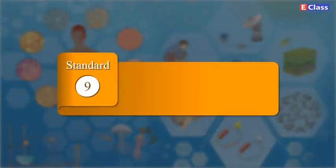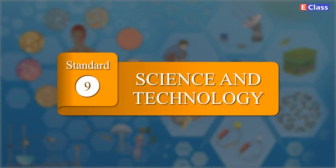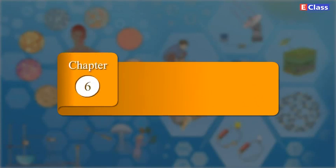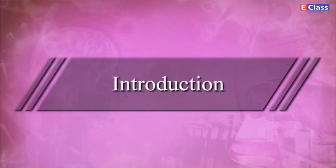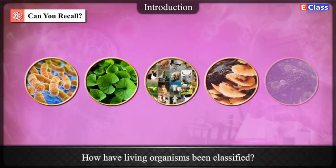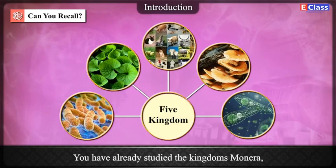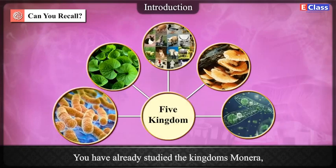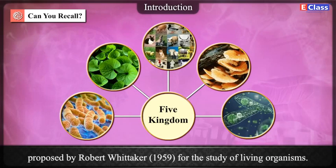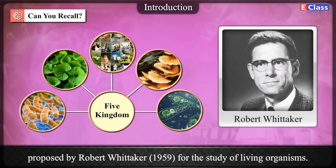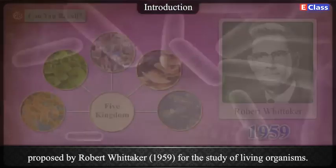Standard 9 Science and Technology, Chapter 6: Classification of Plants. Introduction — Can you recall? How have living organisms been classified? You have already studied the kingdoms Monera, Protista, and Fungi of the Five Kingdom Classification System proposed by Robert Whittaker in 1959 for the study of living organisms.